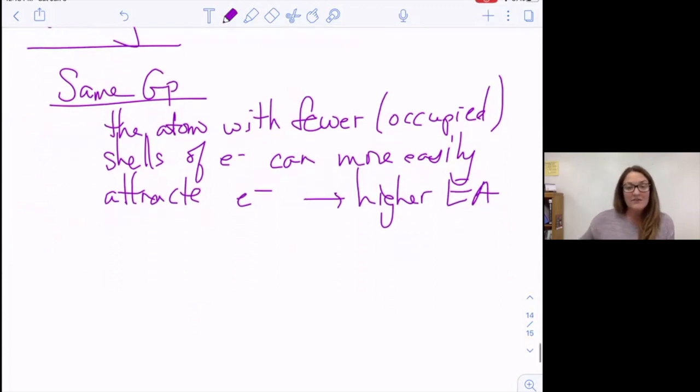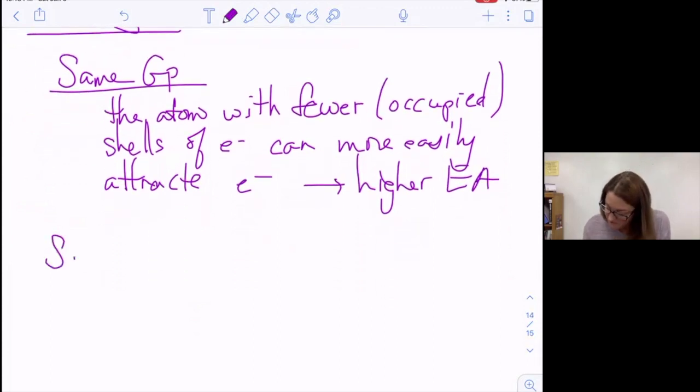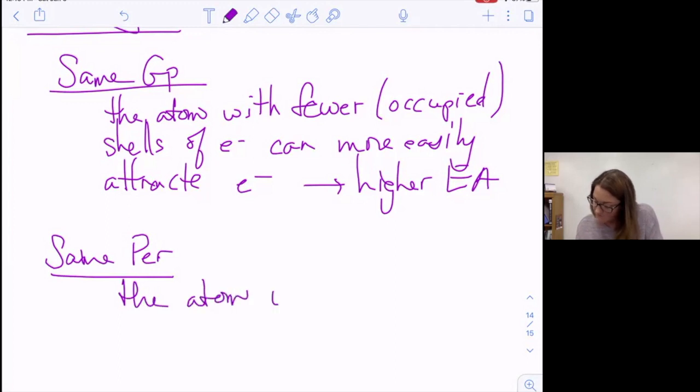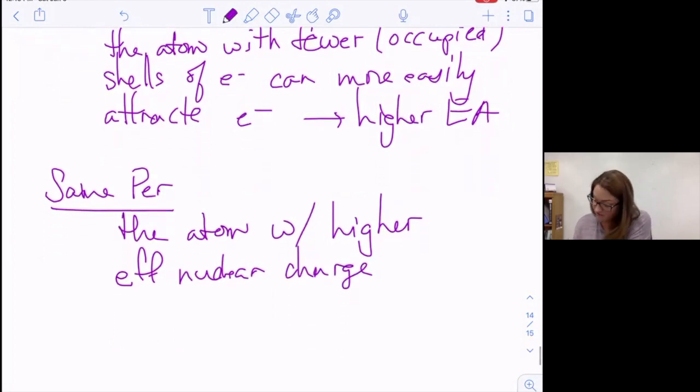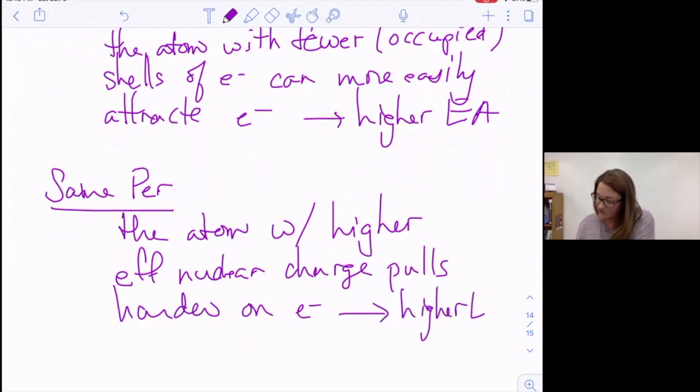If they are in the same row, the same period, the reasoning is different. The atom with the higher effective nuclear charge pulls harder on electrons, giving it a higher electron affinity.